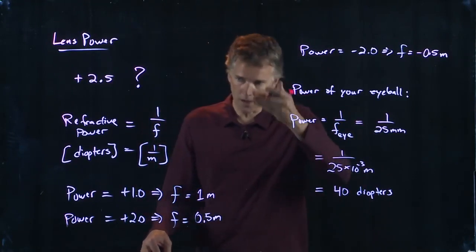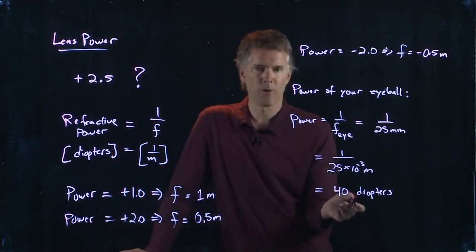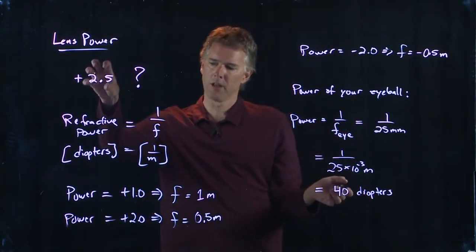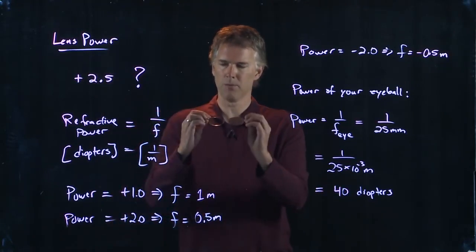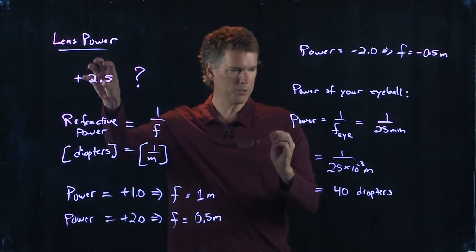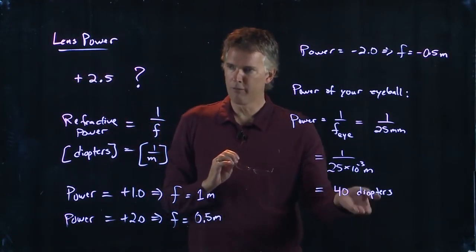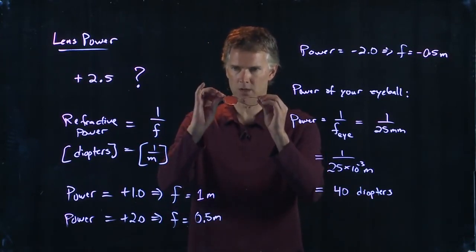That cornea is very curved—it's a very powerful lens. These are sort of typical numbers for your glasses. When I think about the glasses that I put on to read, and I'm going to add a power of 2.5, that's going on top of 40 diopters already. So it's a small fractional change.